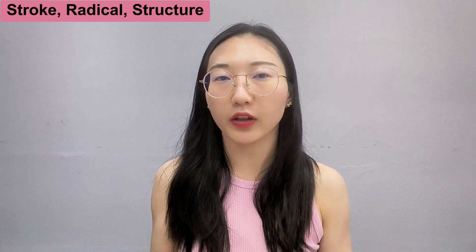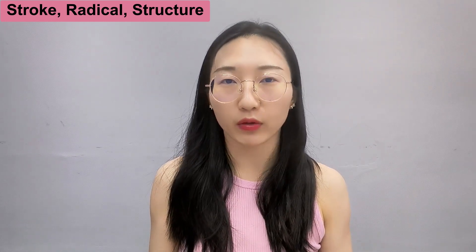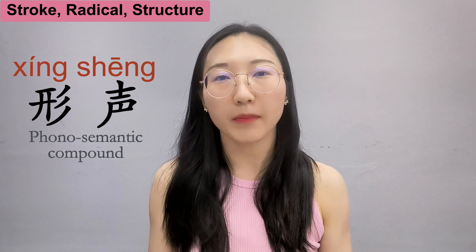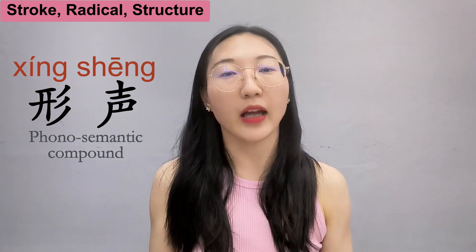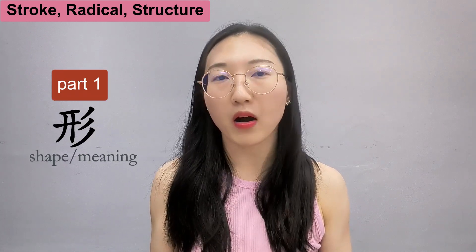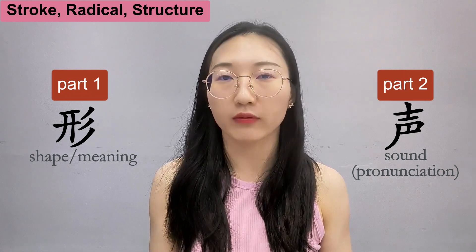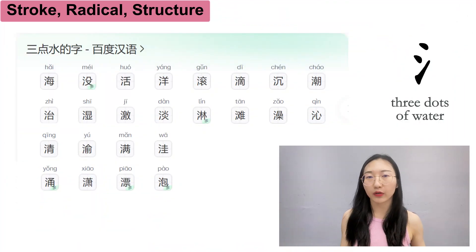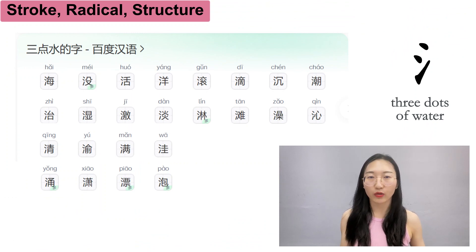Also, if you've seen my last video, you know that the formation of this kind of character is called a phono-semantic compound, meaning one part of the character is for meaning and the other is for pronunciation. Like these characters with radical 三点水 — most of them have something to do with water and have similar pronunciation to their sound component.